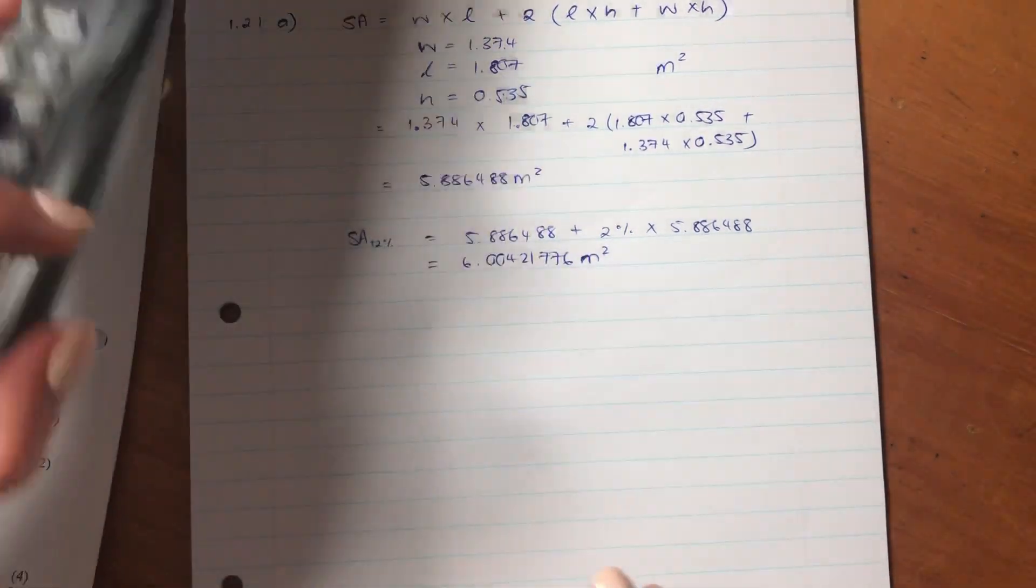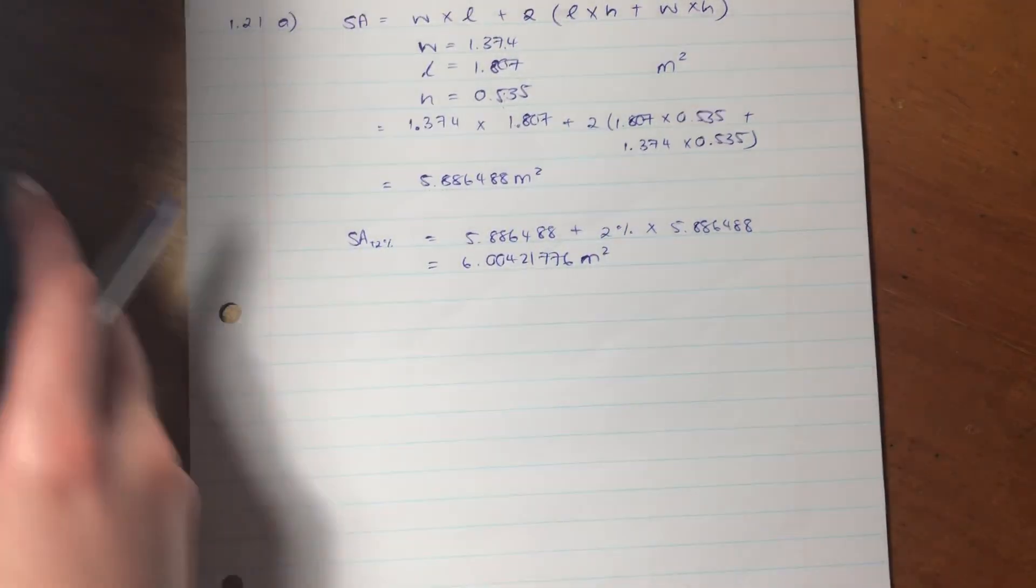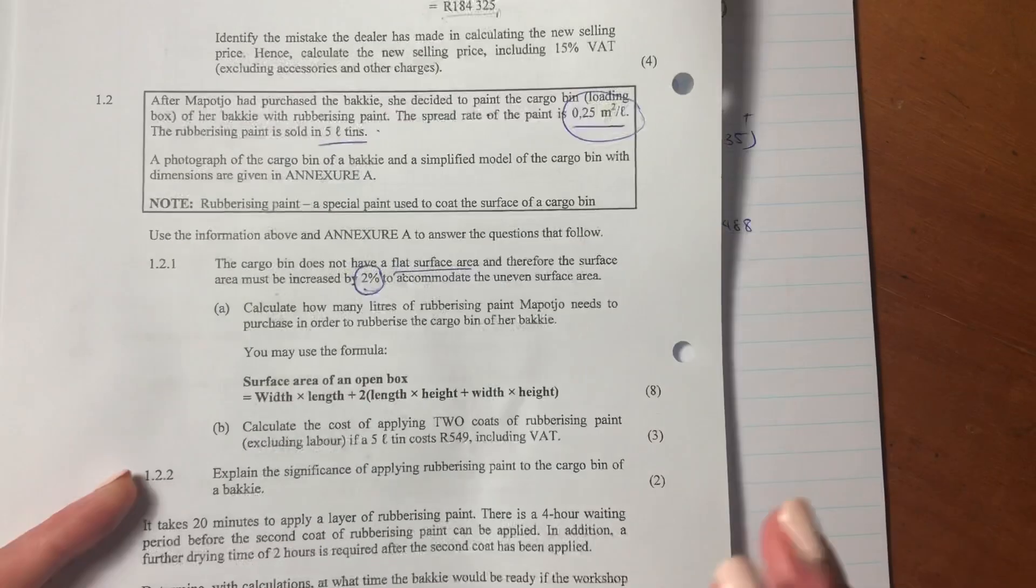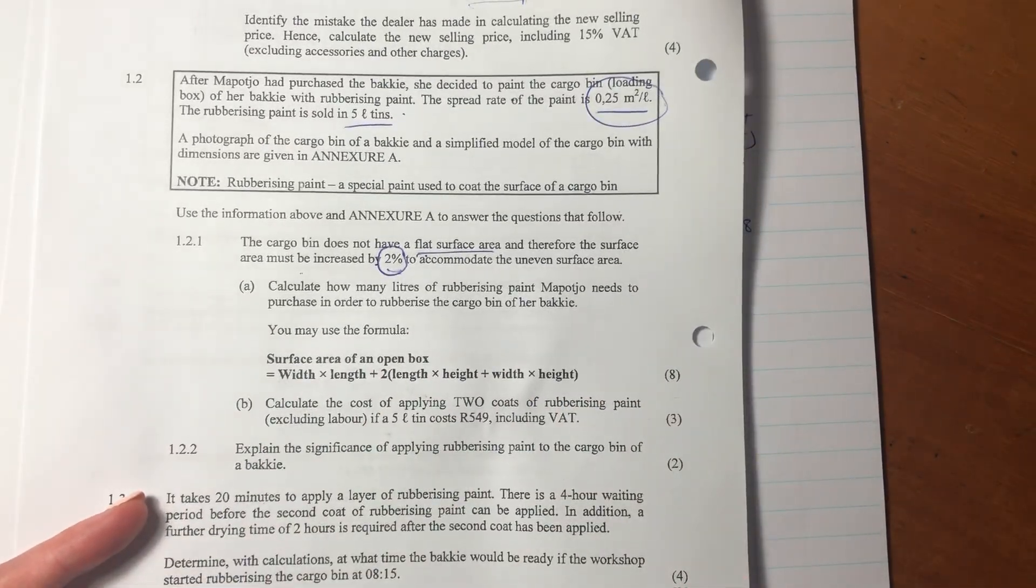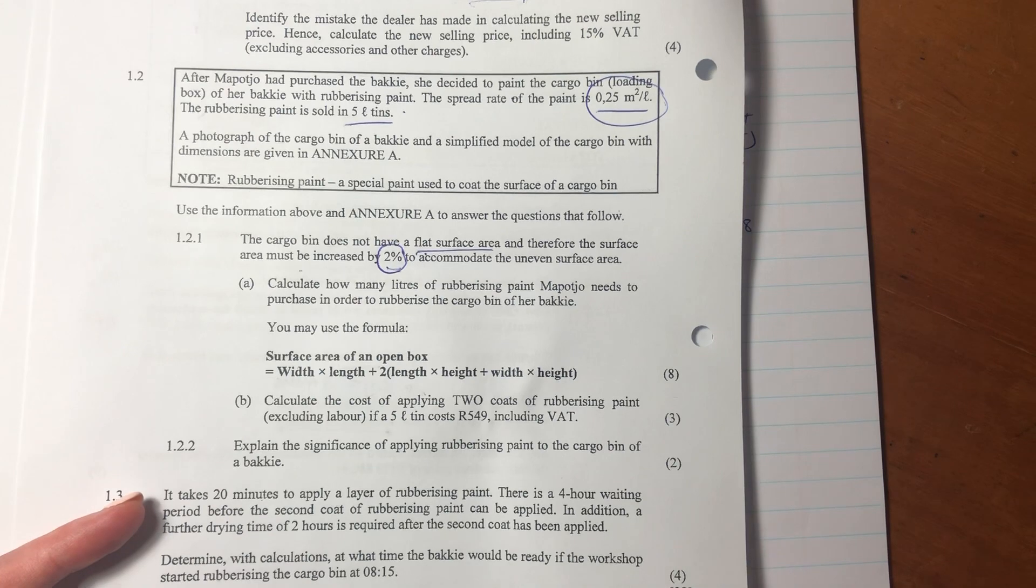So now we've got our surface area that we need to cover. But what it's asked us is how many liters of paint we need. It hasn't asked us what's the surface area, it's asked us how many liters of paint.